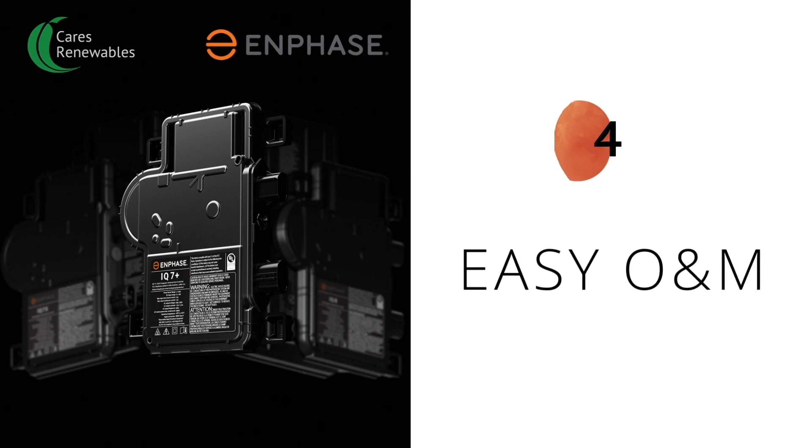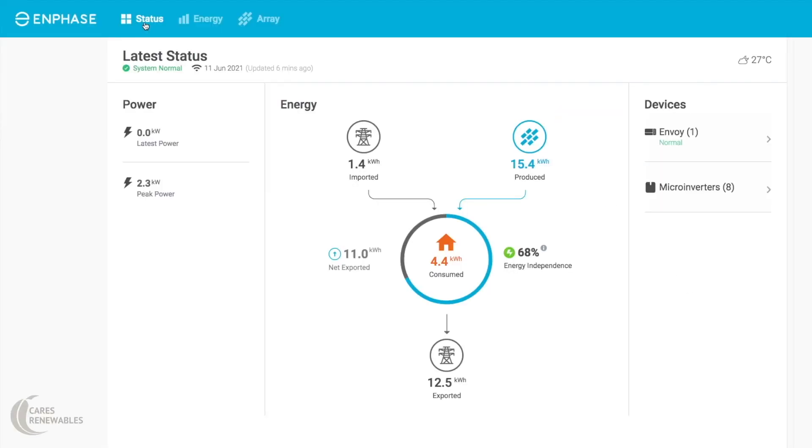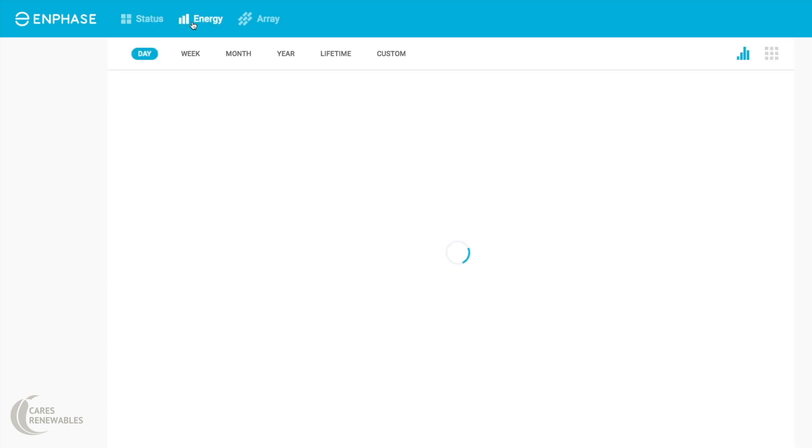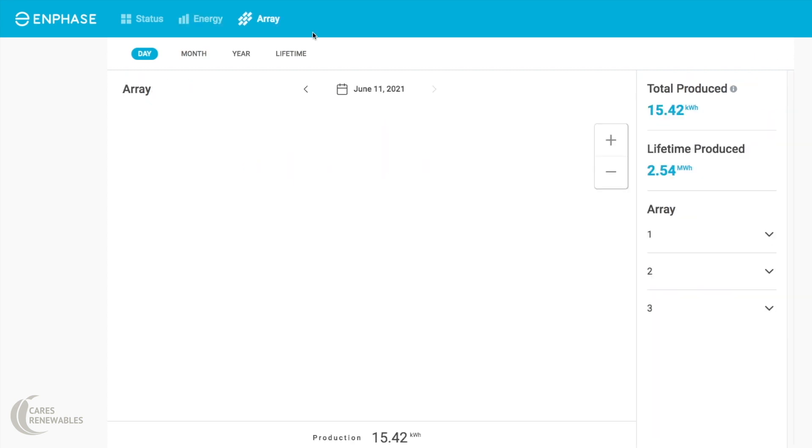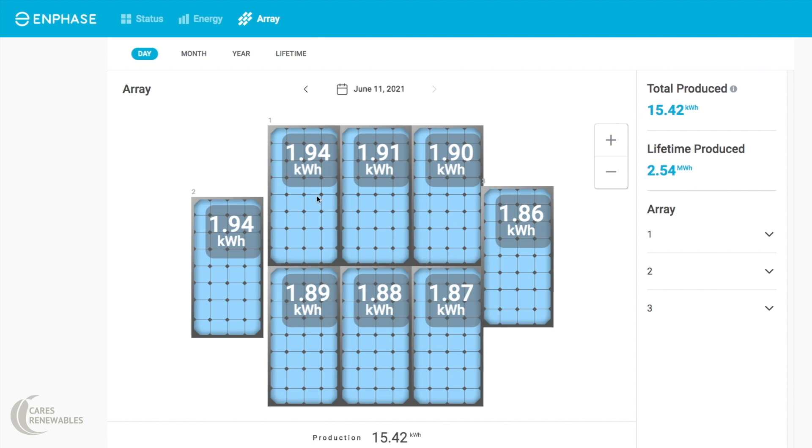Enphase microinverters' unique monitoring features enable easy maintenance of the solar power plant. We can monitor solar power production and energy consumption at site using Enphase Enlighten application. We can also monitor each solar module's power production and detect issues at a solar module level. This gives Enphase an advantage over string inverters, which has only solar plant-level monitoring.